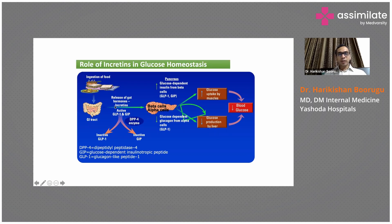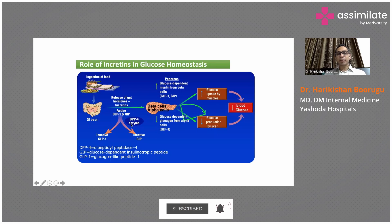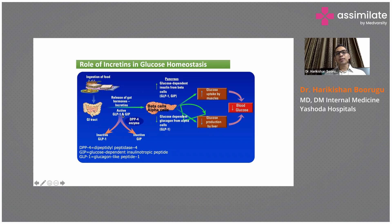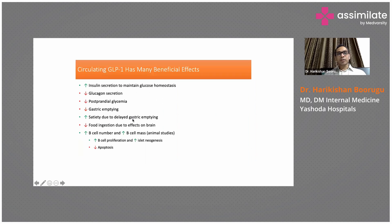GLP-1 is metabolized by an enzyme called DPP-4. The naturally produced GLP-1 agonists are metabolized by this DPP-4 enzyme.